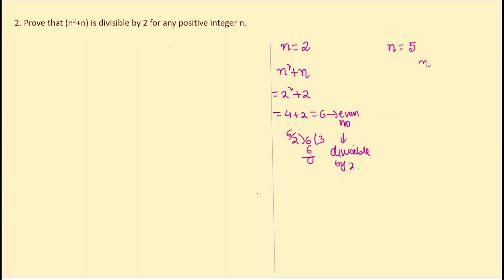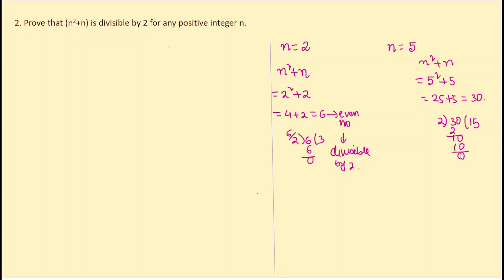Now for n = 5: n² + n = 25 + 5 = 30. Dividing 30 by 2 gives remainder 0, so 30 is also an even number. This confirms that whether n is even or odd, n² + n always gives a number divisible by 2.